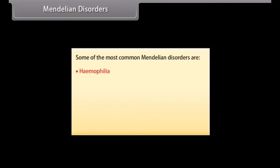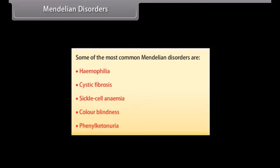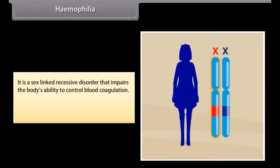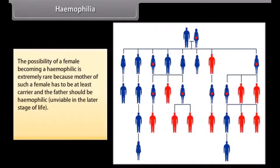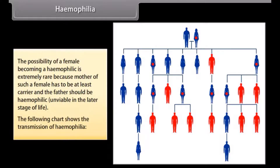Some of the most common Mendelian disorders are haemophilia, cystic fibrosis, sickle cell anemia, color blindness, and phenylketonuria. Haemophilia is a sex-linked recessive disorder that impairs the body's ability to control blood coagulation, caused due to deficiency of certain clotting factors. The transmission occurs from carrier females to unaffected male progeny. A female becoming haemophilic is extremely rare, as her mother must be at least a carrier and her father must be haemophilic. The following chart shows the transmission of haemophilia.